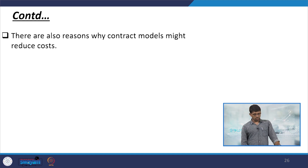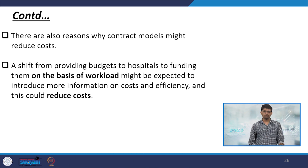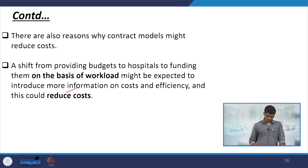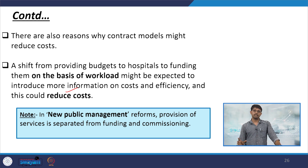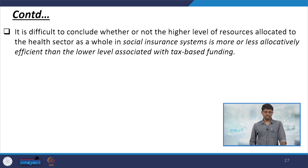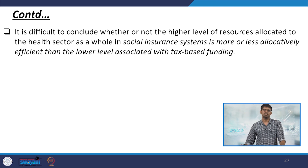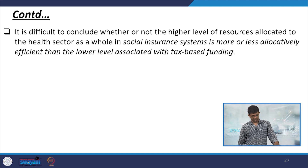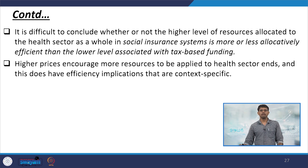There are also reasons why contract models might reduce cost. A shift from providing budgets to hospitals to funding them on the basis of workload might introduce more information on cost and efficiency, which could reduce cost. In new public management, especially for healthcare reforms, provision of services is separated from funding and commissioning. It is really difficult to conclude whether the higher level of resources allocated to health in social insurance systems is more or less allocatively efficient than the lower level associated with tax-based funding.